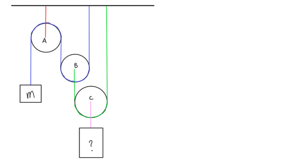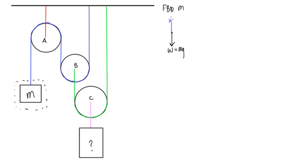First, we need a free body diagram of the box, mass m. So if we draw it as a point, it's going to have its weight pulling down — mg — and it's also going to have a blue force pulling up, and we'll call that tension T. For this system to be in static equilibrium, the tension in this blue cable has to equal the weight of this mass, so we call this T.